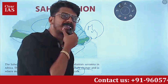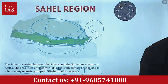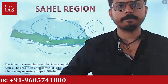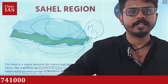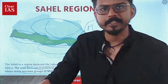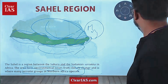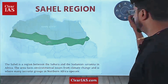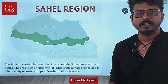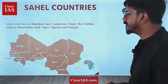A lot of terrorist groups, militants, operate here. You may have heard of blood diamonds — something related to armed groups. So this region is called the Sahel region. Now, which countries come under the Sahel region? That's important.